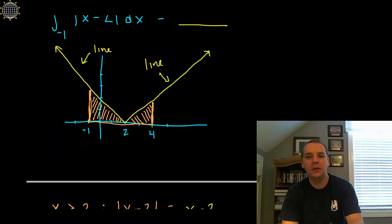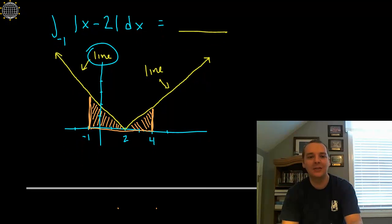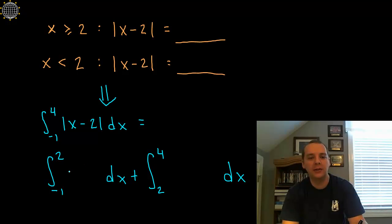Now what was the equation of the line back here, this first line from negative 1 to 2? Well that was where the x's were less than 2. So I'm going to use 2 minus x for this region. And between 2 and 4, if the x's were greater than 2, you remember that this was 2 minus x. If the x was beyond 2, then you just kept it x minus 2.